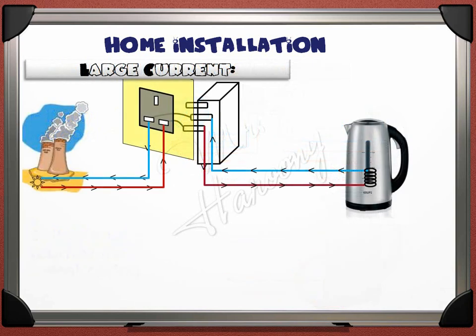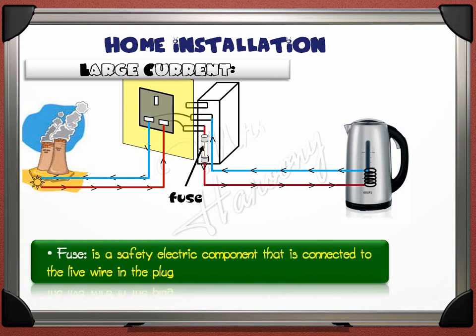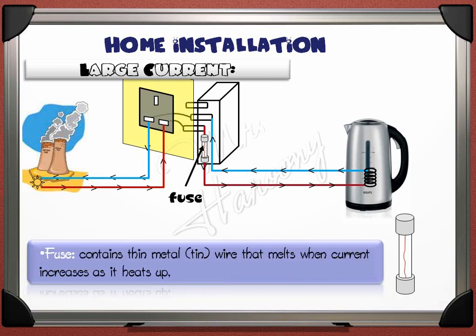Let's first see how to solve the problem of large current. A safety component named the fuse is fitted to the live wire in the plug. The fuse is made of a thin tin wire. Tin is a metal that has a relatively low melting point, so if current increases, it heats up and melts, cutting the current and avoiding it from damaging the appliance. The fuse contains the metal tin wire that melts when current increases as it heats up. Fuses are manufactured with certain values in amperes.